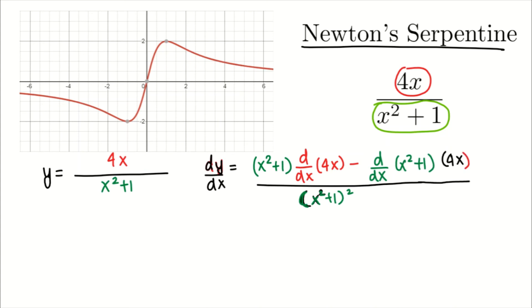Now it's very simple. We just need to figure out what the missing parts of the puzzle are. So you have x squared plus 1 times the derivative of 4x, which is just 4, minus the derivative of x squared plus 1, which is 2x, multiplied by 4x. All of this is divided by x squared plus 1 squared.